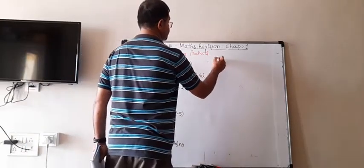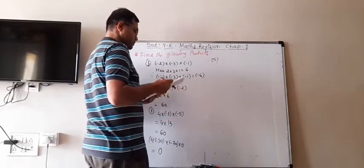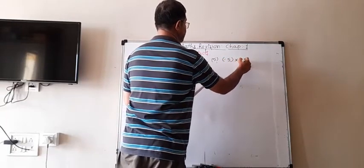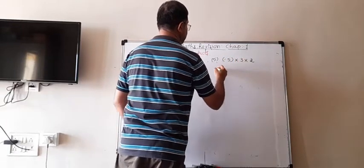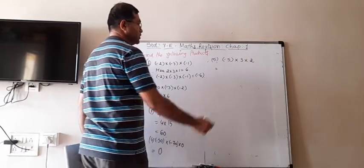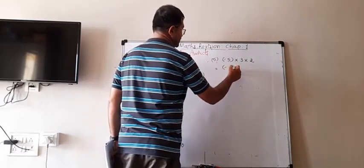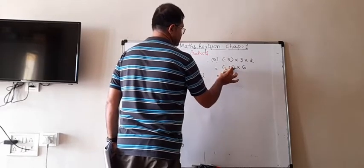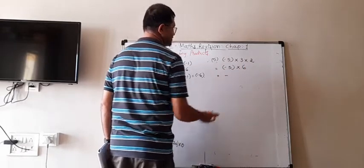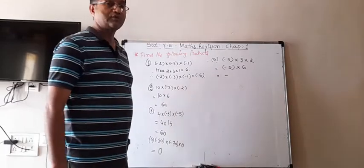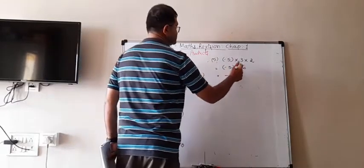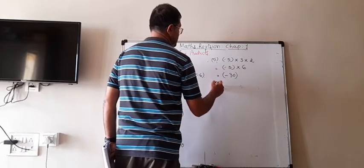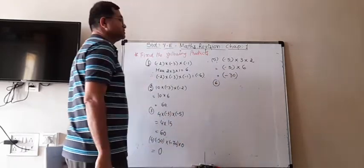Fifth: (-5) × 3 × 2. Multiply the numbers: 5 × 3 × 2 = 30. One is negative and two are positive, so the count of negatives is odd and the answer is negative: -30.